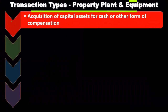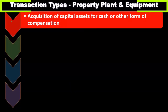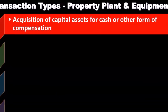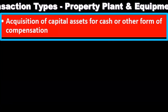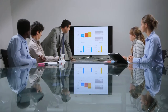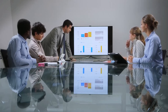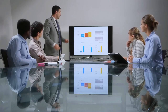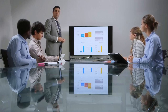Transaction types for property, plant, and equipment include the acquisition of capital assets for cash or other forms of compensation. For smaller companies, we could audit essentially all purchases of property, plant, and equipment through substantive testing, since there will be fewer of them.